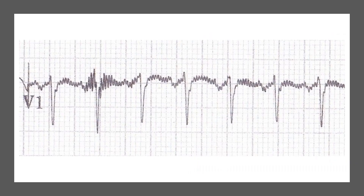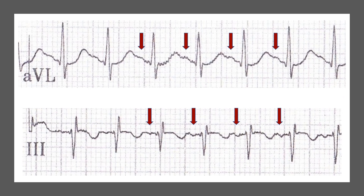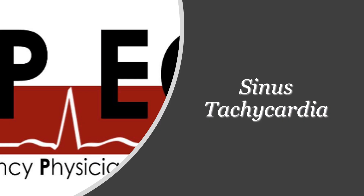So now we have a narrow complex regular tachycardia with one P wave before each complex. This is sinus tachycardia. Our patient has sinus tachycardia with a rate of 173.